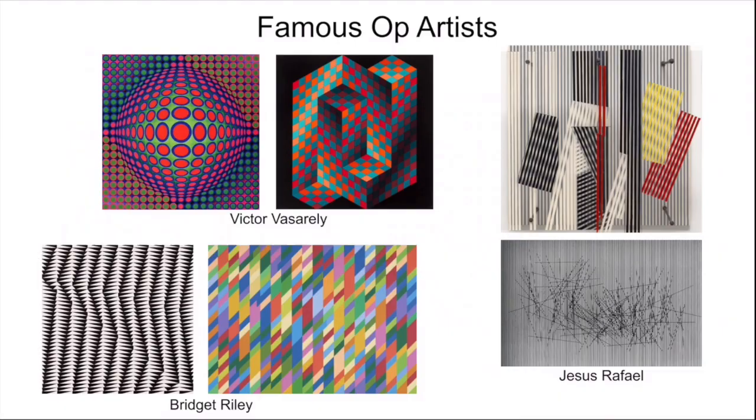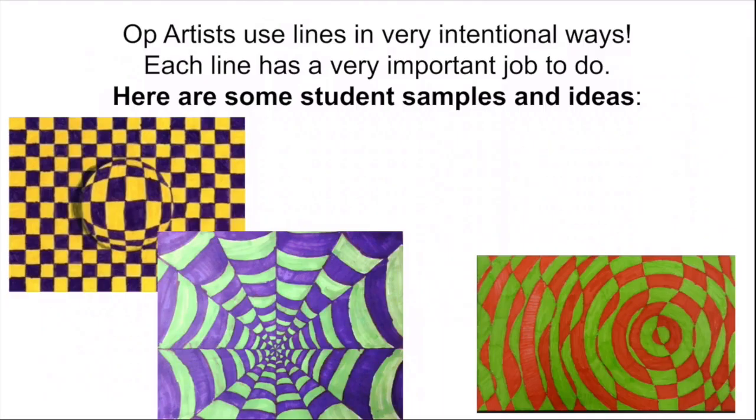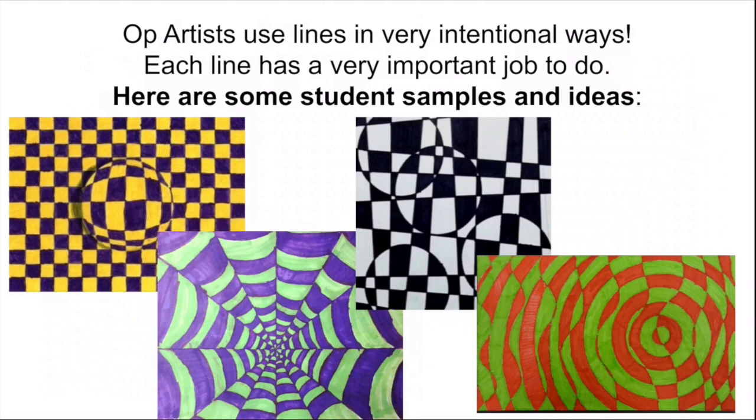These are some student examples of the way that we can make op art and really start practicing how to use lines in very intentional ways. That means putting a line on page on purpose. It has a job to do. Each line has a very important task to make the viewer, the person that's going to be looking at our art, feel like our art might be moving in some way.